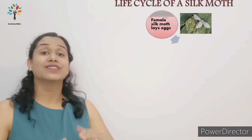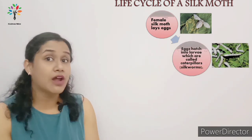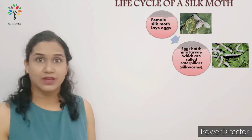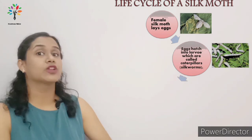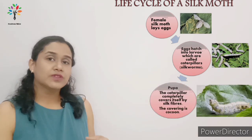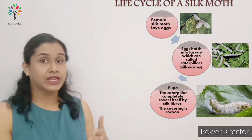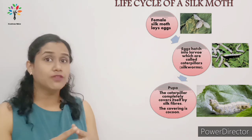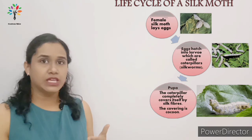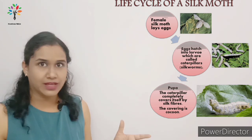Once the eggs are laid, the larva comes out from the egg, and this larva is the caterpillar or the silk worm. The caterpillar comes out and it starts eating — it likes the soft fresh mulberry leaves. It feeds on the mulberry leaves for 25 to 30 days and then it grows enormously in size.